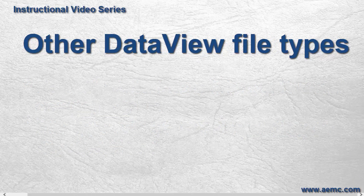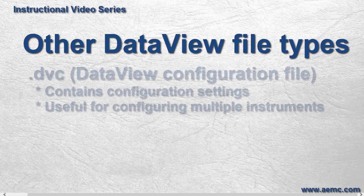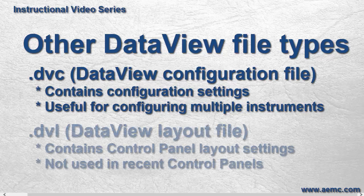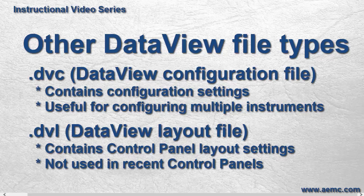In addition to the ones already mentioned, there are two other file types associated with DataView. The first is DVC, or DataView Configuration file, which contains the instrument configuration settings specified by the user through the Control Panel. Some Control Panels allow you to save these settings to a file on your PC and then use this file for future configuration sessions, which can be useful when configuring multiple instruments in exactly the same way. Also, some long-time users of DataView may have encountered the file type DVL, or DataView Layout file. This file contains layout settings that define how the Control Panel displays data on the PC screen. Layout files are no longer used by more recently released versions of DataView Control Panels, so in most situations it's unlikely you'll ever need to work with DVL files.